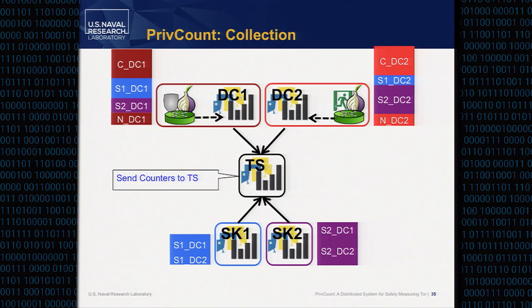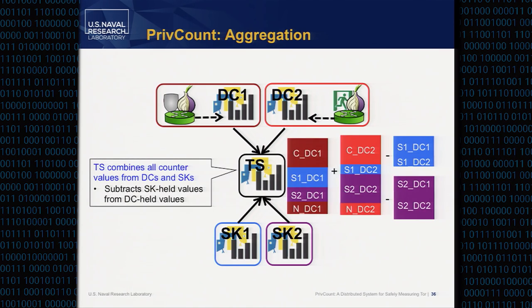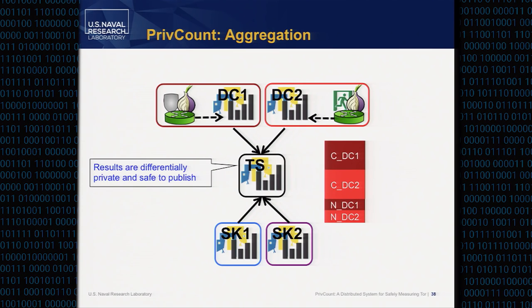At the end of the collection process, each of these counter values are sent to the tally server. The tally server combines all counters from the various nodes — it takes the data collector counters and subtracts off the sharekeeper counters. The values that were added at the beginning are cancelled out, leaving the noise from each data collector plus the actual counts from each data collector. The tally server can't separate these into per-data-collector values. Because of the noise included by each data collector, the results are differentially private. This final value, the final tally, is safe to publish publicly.